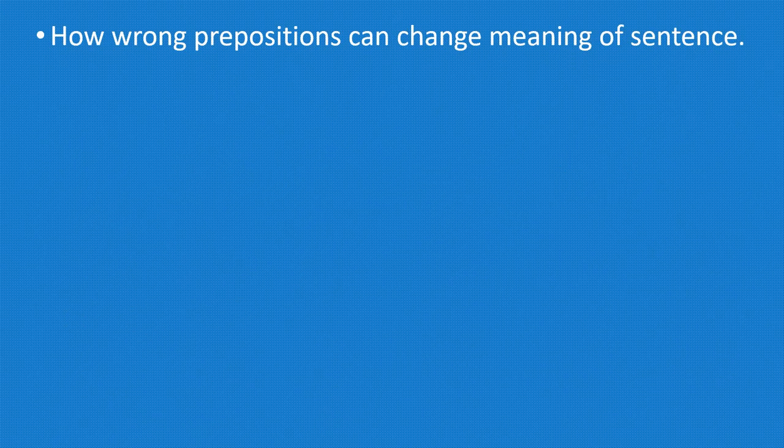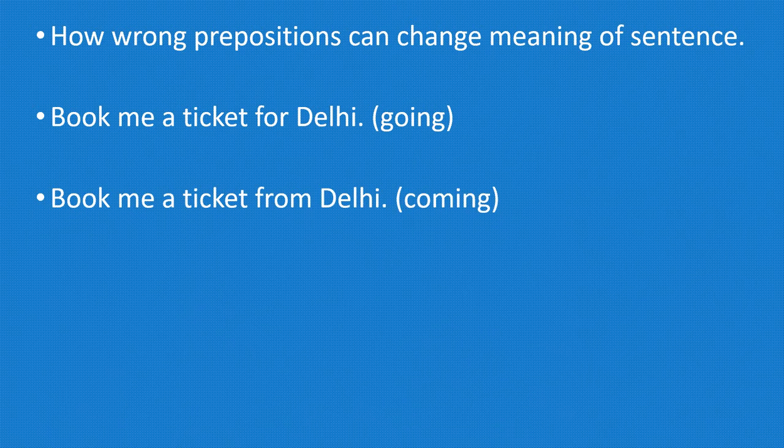How wrong prepositions can change meaning of sentence. Book me a ticket for Delhi - this means I am going to Delhi. Book me a ticket from Delhi - this means I am coming from Delhi.